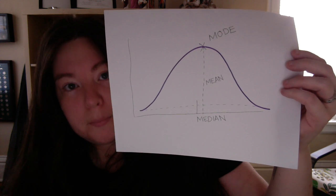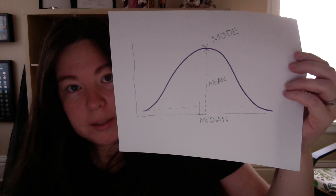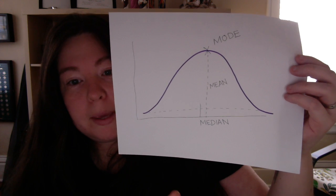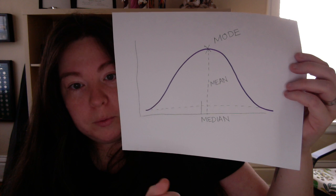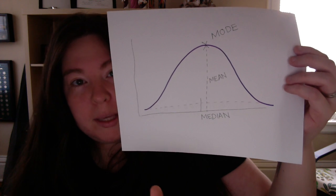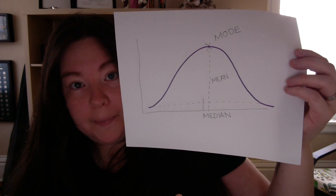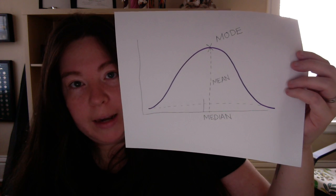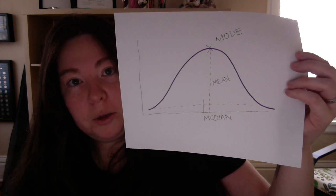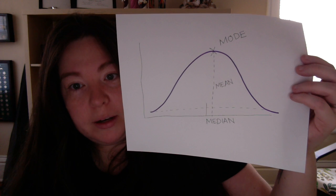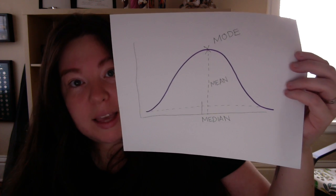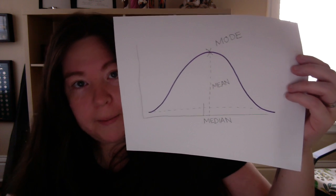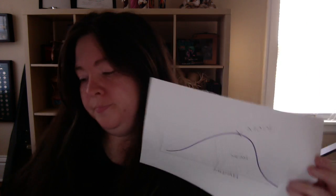The mode is the tippy top. The median is the middle of the two kind of bottoms of the bell. The mean is a little harder to eyeball — you really kind of need to do a little bit of calculation. But again, in this case, the mean would be right about the middle.